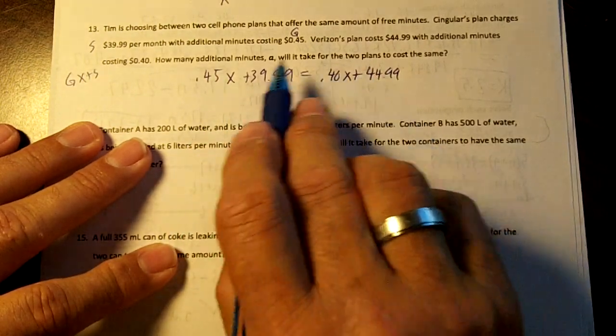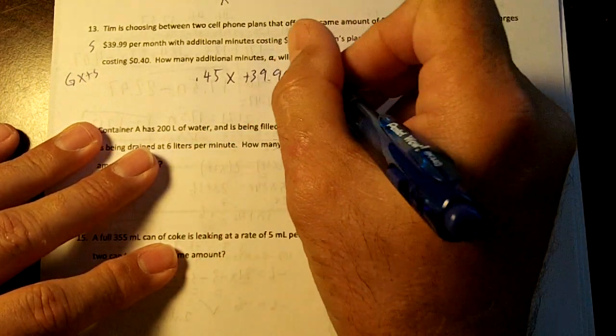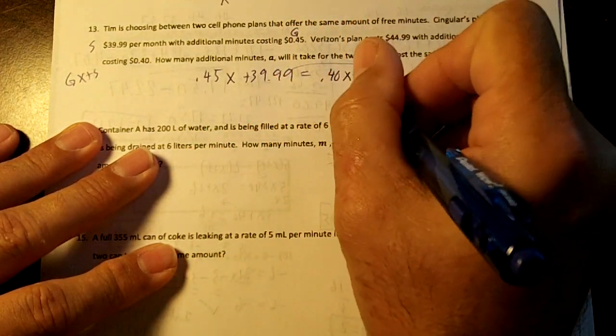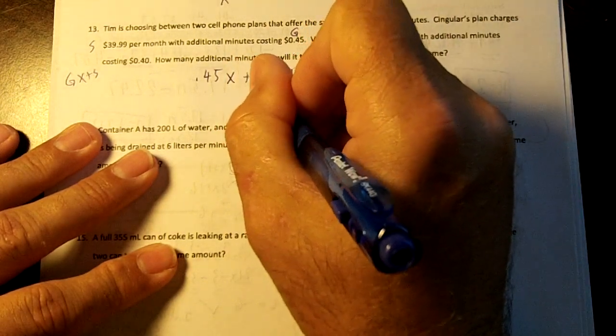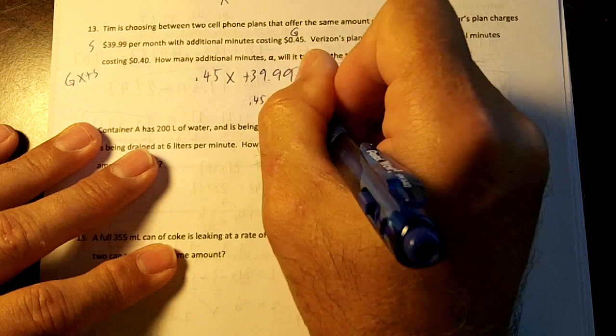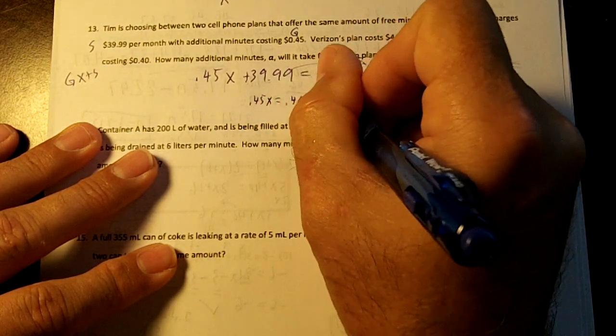Eventually, this is going to catch up with this because each minute is more. So the first thing we want to do is combine our numbers. We're going to move the number over. So we're going to subtract $39.99. We'll get .45X equals .40X. And then this is just going to be $5, plus $5.